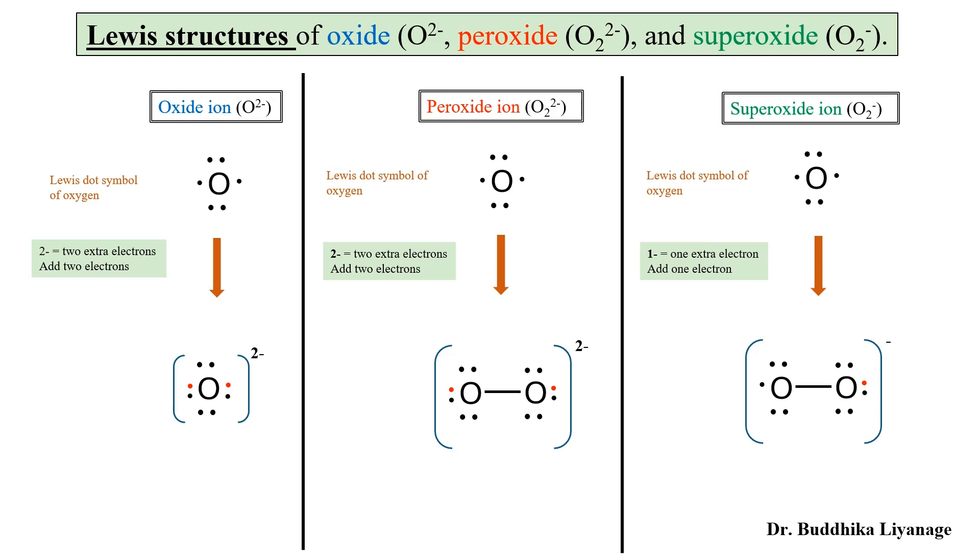I hope now you understand how to draw the Lewis structure starting from the neutral oxygen atom for oxide, peroxide, and superoxide.